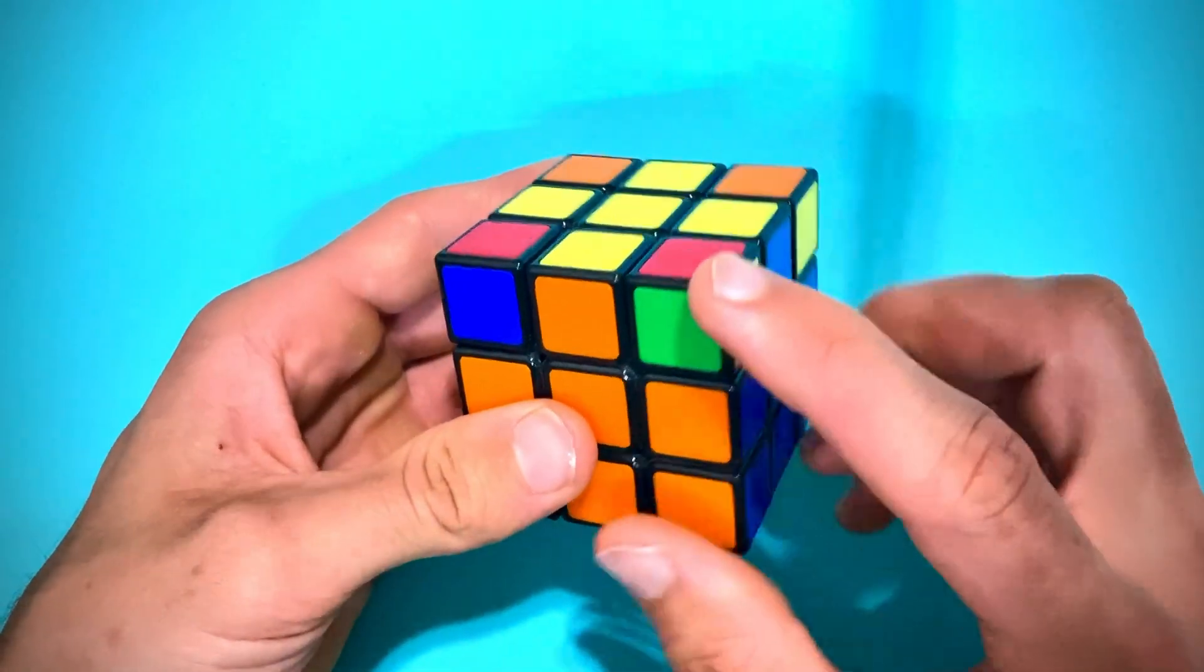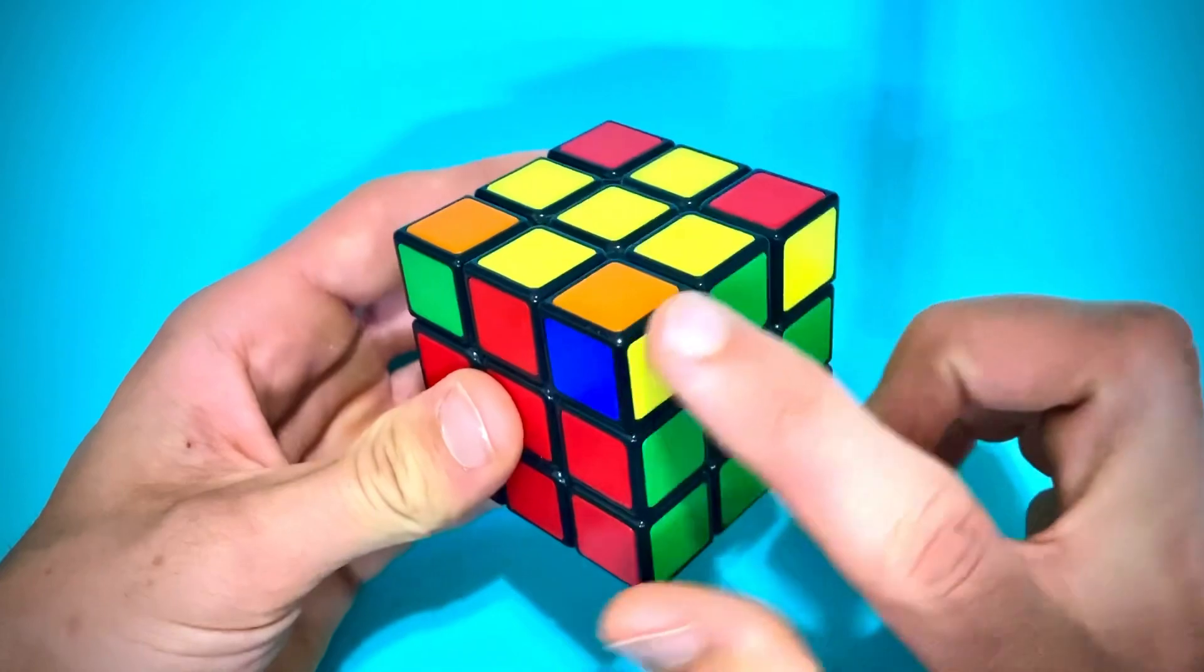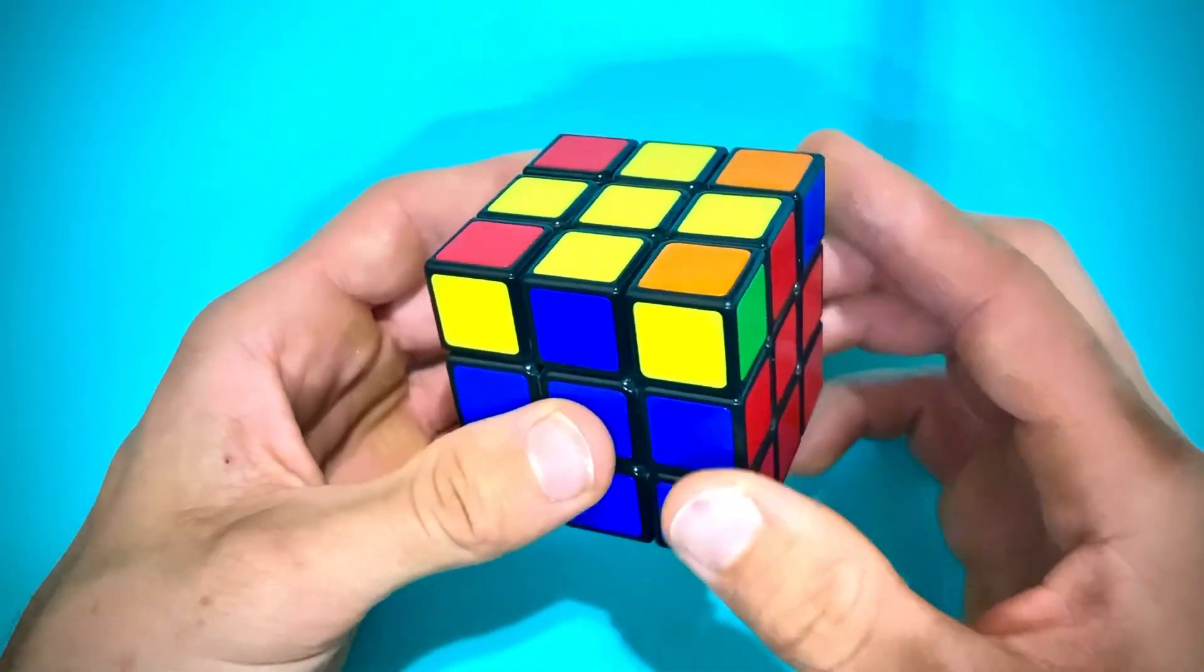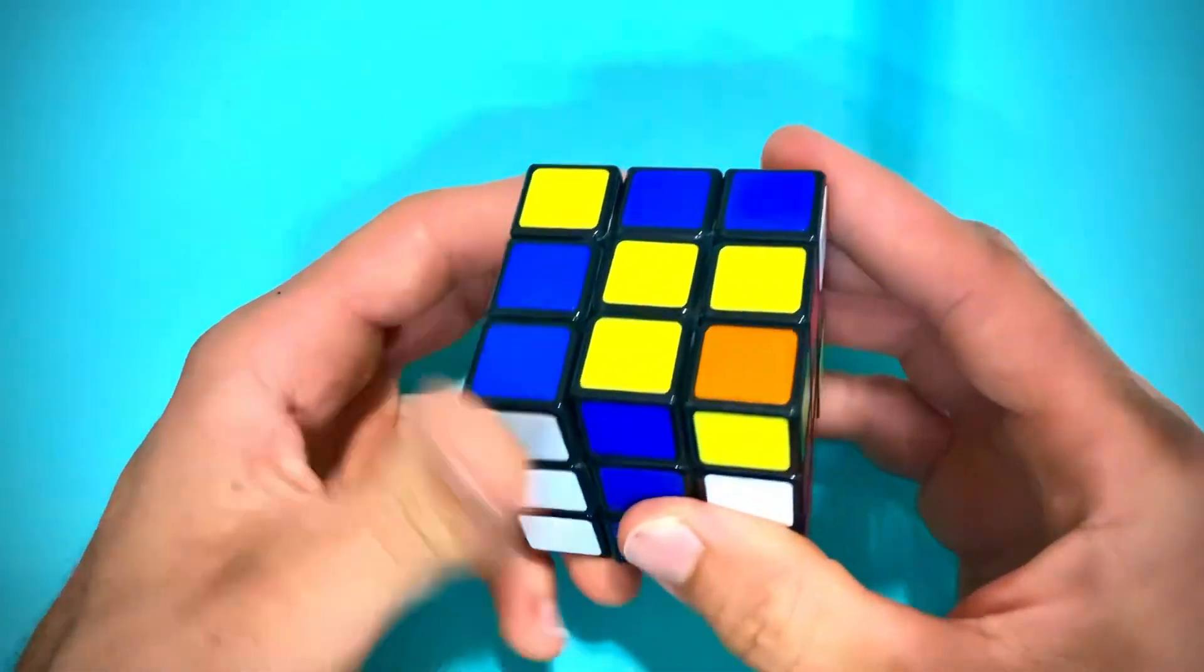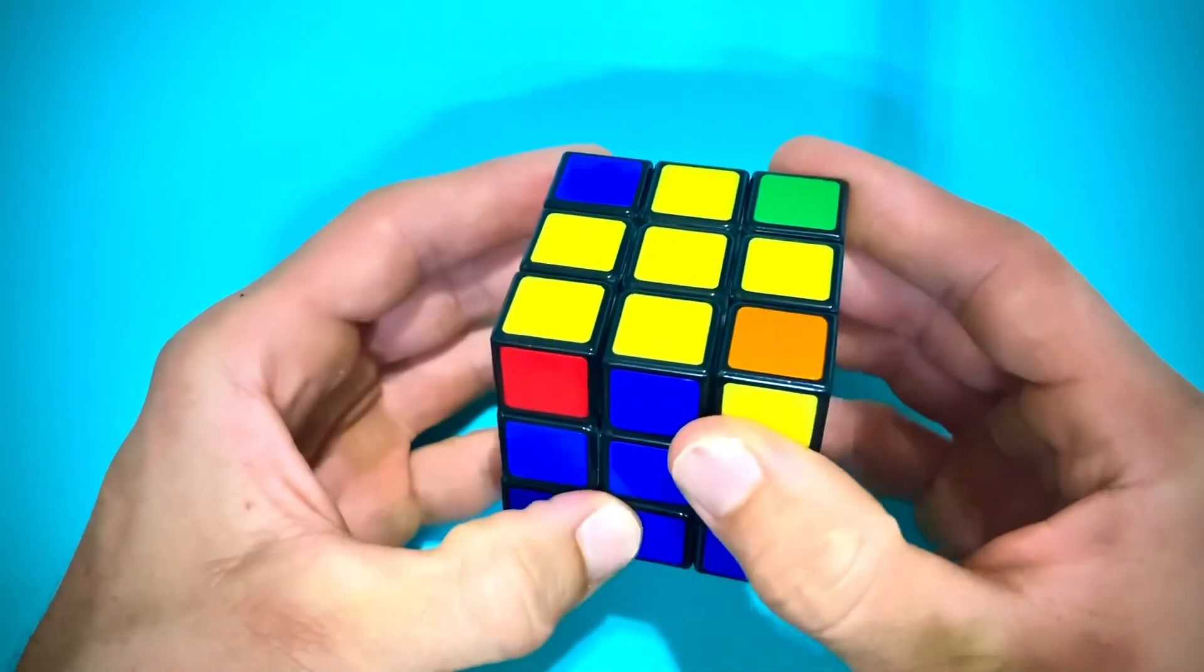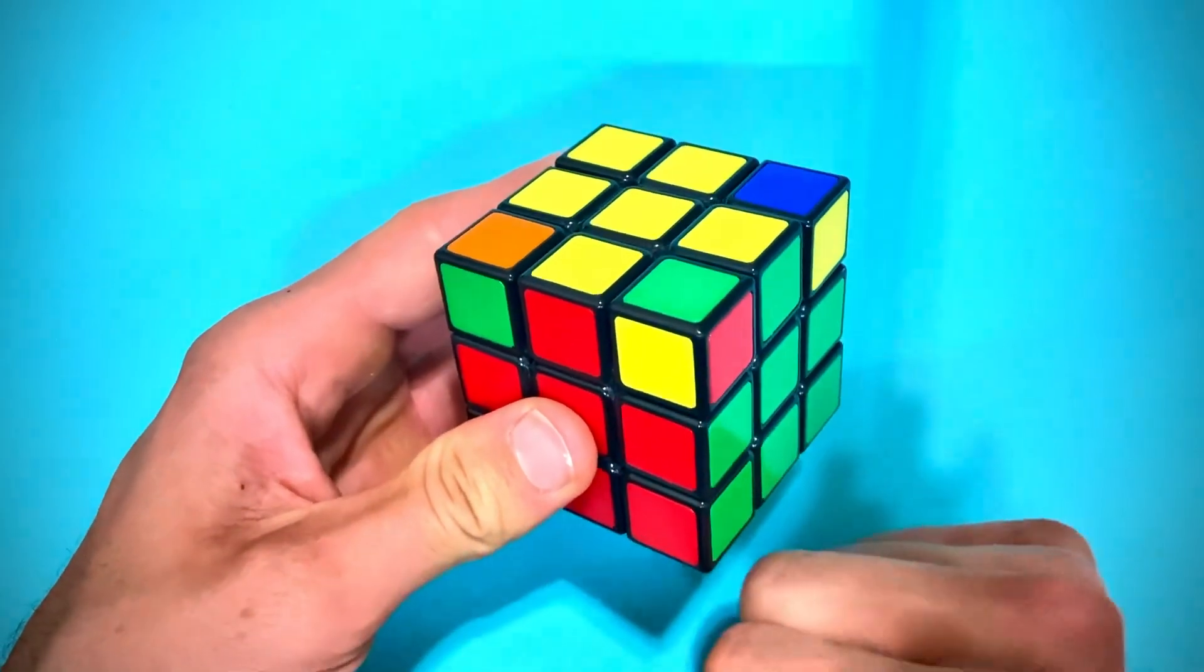Sometimes, as you look around the cube, not even one corner will be in its correct location. That's okay, just start from any side and do the sequence once. And then you can look around the cube and there will be one in its correct location.